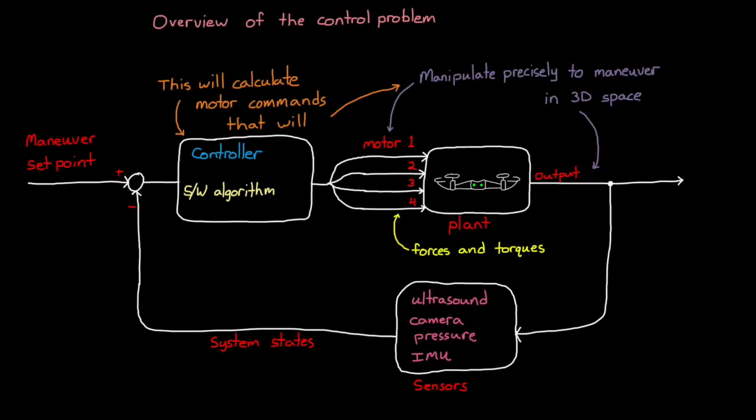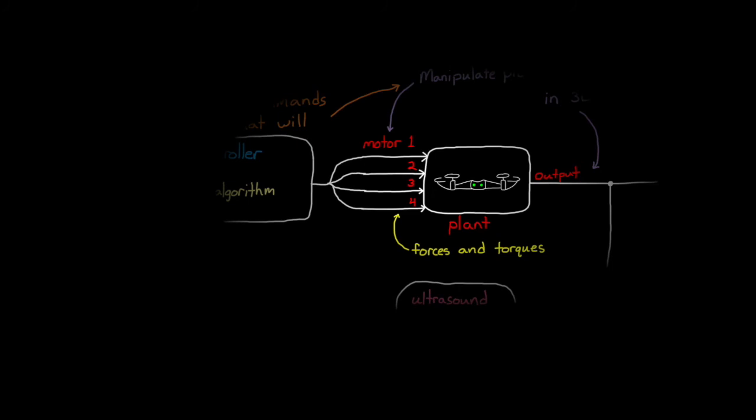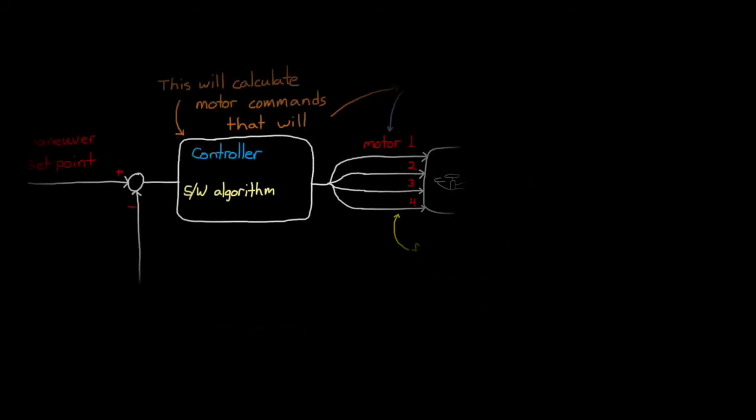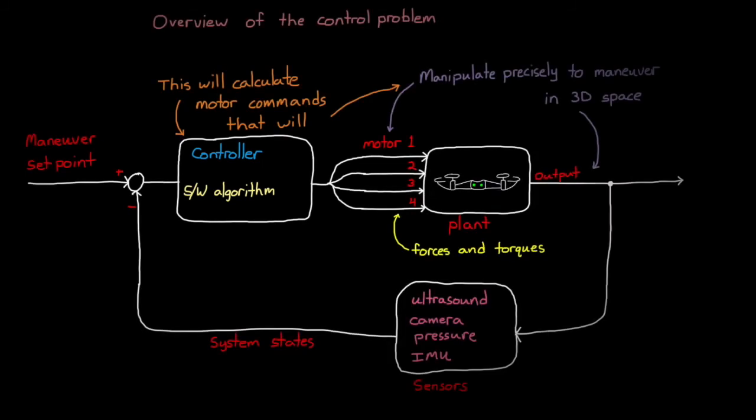Alright, so we know that manipulating the four motors in specific ways will allow us to control the drone in 3D space. And we have a set of sensors that we can use to estimate the state of the system. And we have an onboard processor that can run our control logic. The control system development will ultimately be done in Simulink, where we're going to build and simulate the quadcopter model, tune the controller, test it in a closed-loop simulation, and then finally, automatically generate flight code that we're going to load into the onboard microcontroller on the Parrot mini drone. But the very next step is to figure out how we want to set up the control system architecture. And we're going to talk about that in the next video.